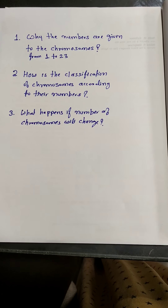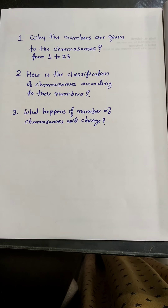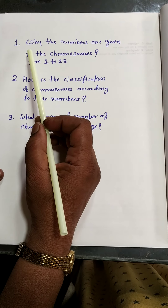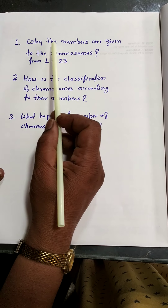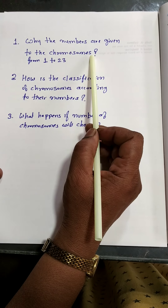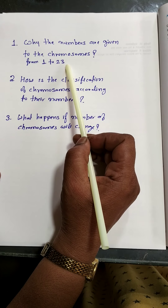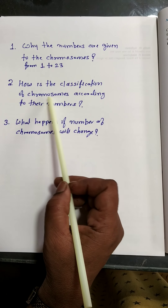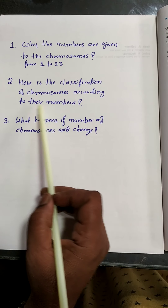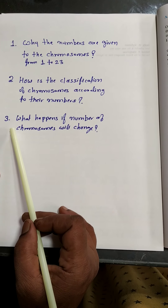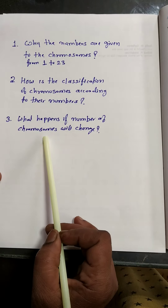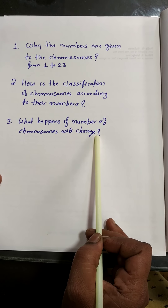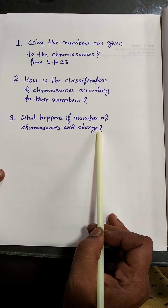Good morning students. Today we will discuss some facts about chromosomes with some questions. The first question is: why are numbers given to chromosomes from 1 to 23? The second question is: how are chromosomes classified according to their numbers? The third question is: what happens if the number of chromosomes changes? Let's see with the chart of chromosomes in your Standard 9 book.